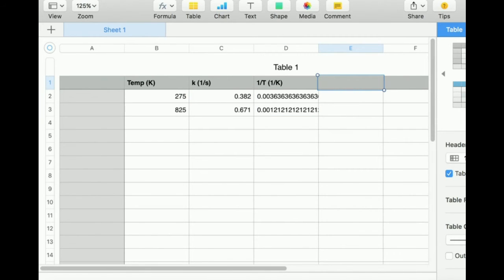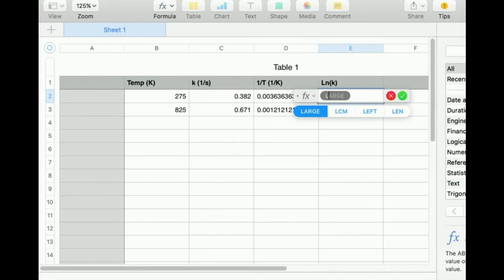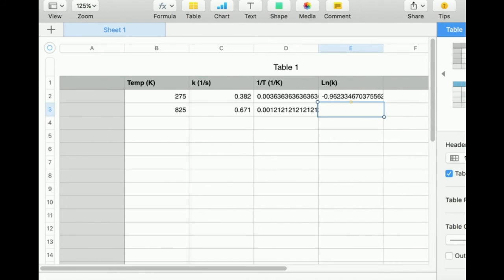And over here, I need to take the natural log of the rate constant, lowercase k. So that means I need to take equals ln. Here's my natural log. And then I'm going to take this of C2, and then I'm just going to drag this down like that.